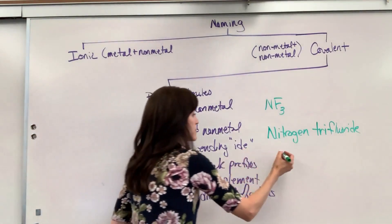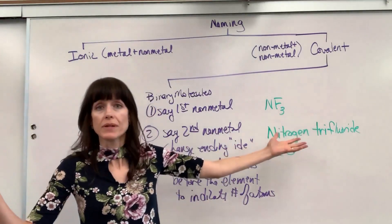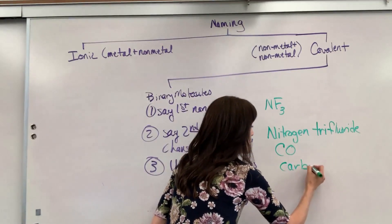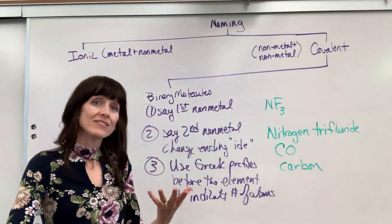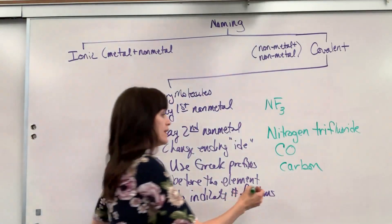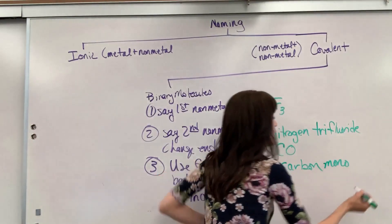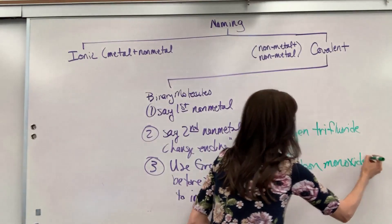Let's do a couple more. Check this one out. CO. So I say the first one, carbon. There's only one of them. It's fine. I don't have to use mono. Carbon. But the second element, oxygen, I've only got one. So I have to tell the reader I've only got one. That is going to be monoxide. So mono and then oxide, we can drop one of the O's. Monoxide. Carbon monoxide.